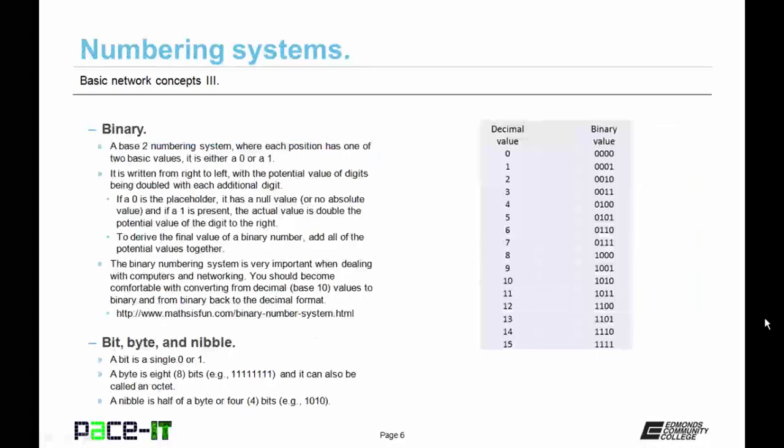Binary is a base two numbering system where each position has one of two basic values. It is either a zero or a one. It is written from right to left with the potential value of digits being doubled with each additional digit that's added. If a zero is the placeholder, it has a null value, or no absolute value.